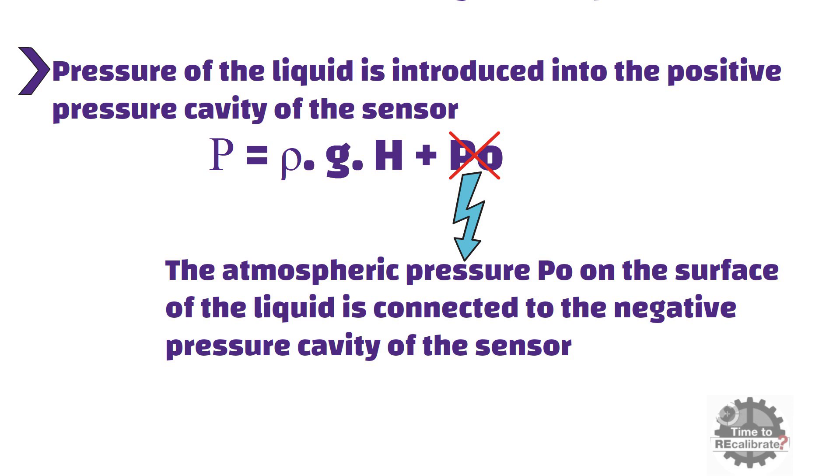After compensation, pressure measured by submersible sensor is rho times g times H.